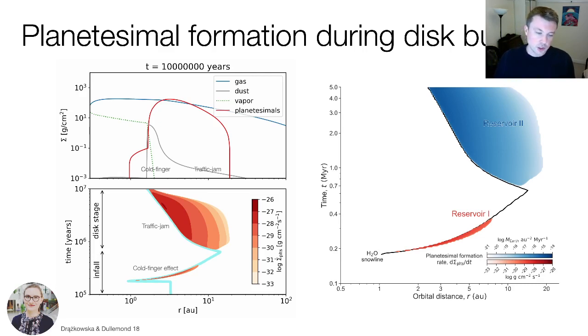That is relevant for the formation of iron cores in planetesimals, therefore meteorite parent bodies, and the availability of water that is accreted from the surrounding accretion disk.